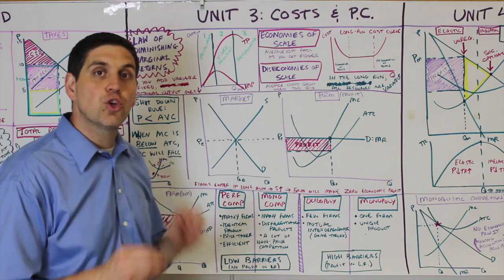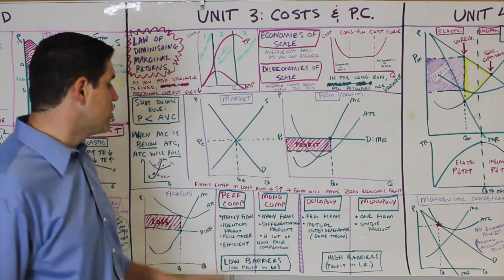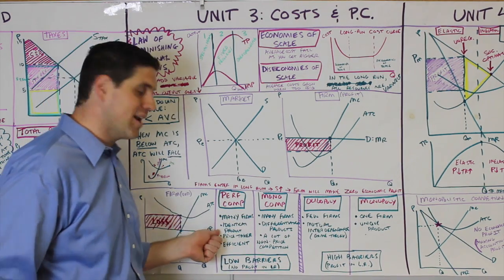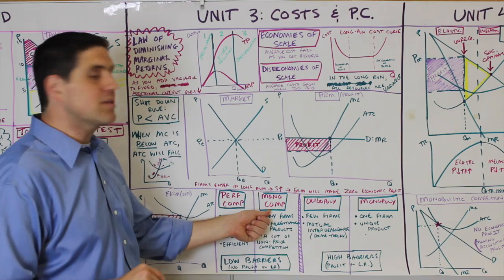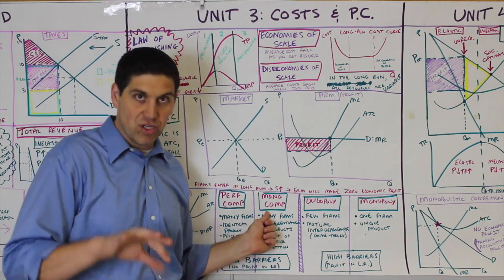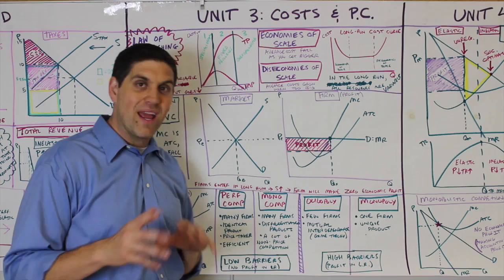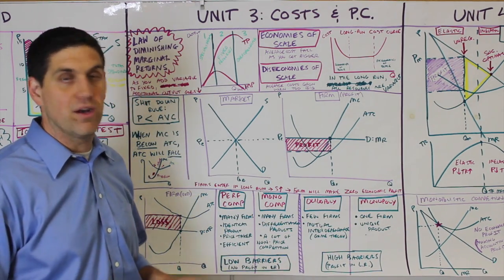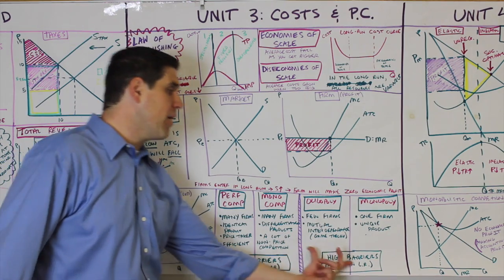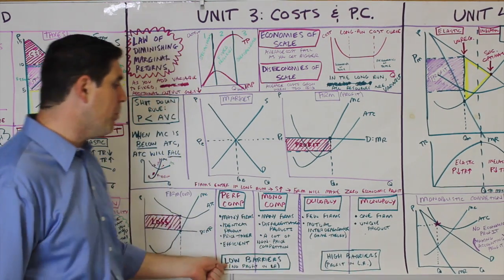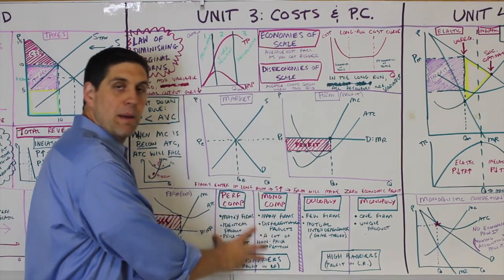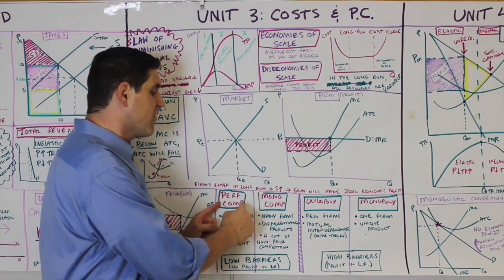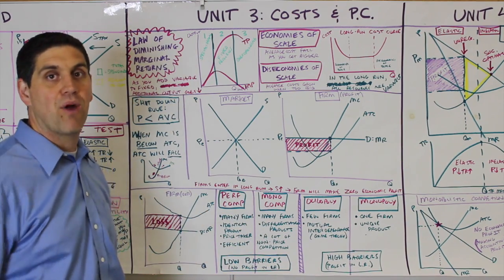The AP test asks about what makes each structure different. For perfect competition, it's being a price taker with identical products. Monopolistic competition has differentiated or slightly different products. Oligopolies use game theory or interdependence, and a monopoly has a unique good with no competitors — only one firm producing. Remember: high barriers in monopolies and oligopolies; low barriers in monopolistic competition and perfect competition. Perfect competition and monopolistic competition have no economic profit but do have positive accounting profit.